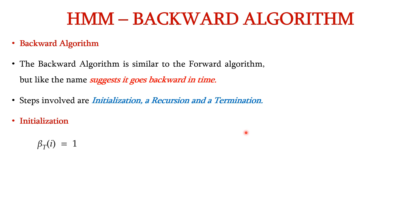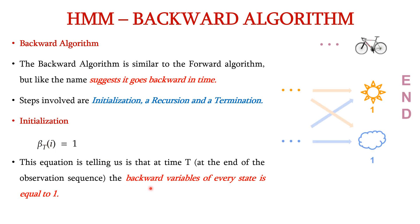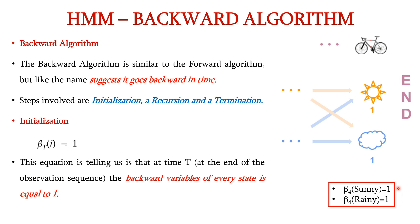The general equation for initialization is beta_T(i) = 1. This tells us that at time T — that is, at the end of the observation sequence — the backward variable of every state is equal to 1. In our example, the end of the observable sequence is biking, the fourth observable state. So we initialize beta_4(sunny) and beta_4(rainy) both as 1.